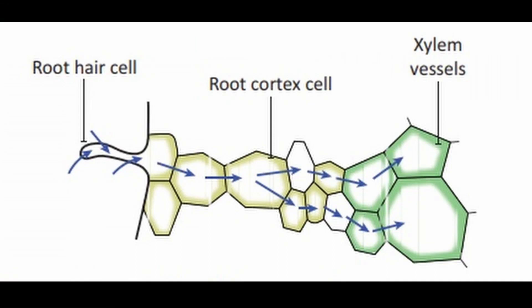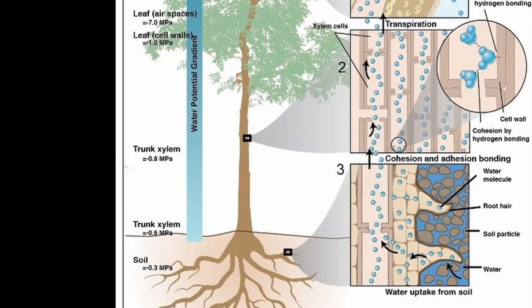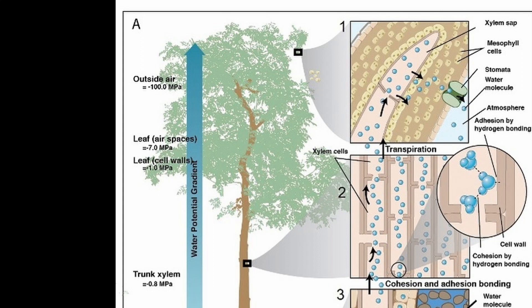Once water is inside the root, water molecules — which have a very strong connection to one another — stay linked and move upward to the leaves through the xylem, the conducting tissue of the plant. You can imagine the xylem as a straw allowing a continuous connected movement of water to the top. As water evaporates or transpires from the leaves, it helps pull water up from the roots, so transpiration itself is a driver for that water movement.